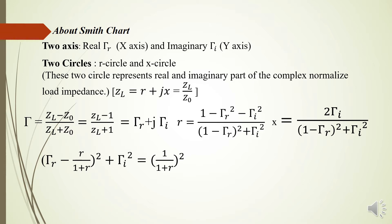From the expression of small r in terms of Rho_R and Rho_i, if we rearrange the equation of small r, we can find the R circle equation: (Rho_R minus r/(1+r)) squared plus Rho_i squared equals (1/(1+r)) squared. This resembles the general equation of a circle, with center at (r/(1+r), 0) and radius 1/(1+r).